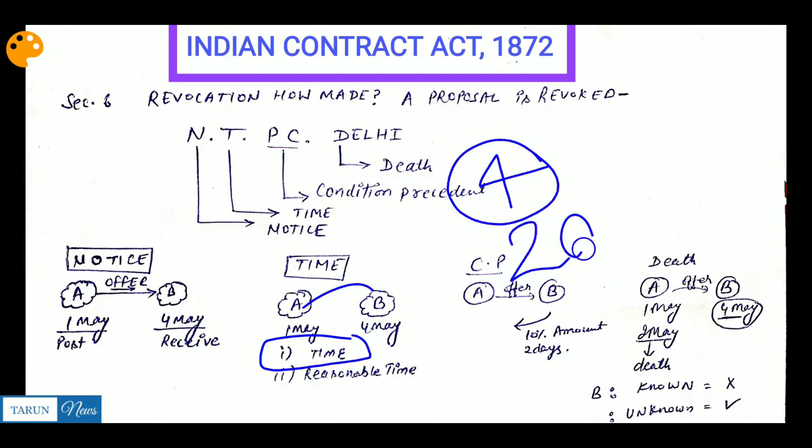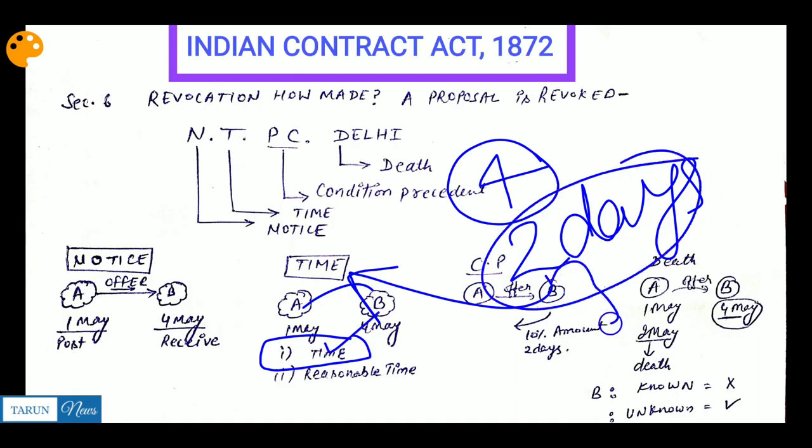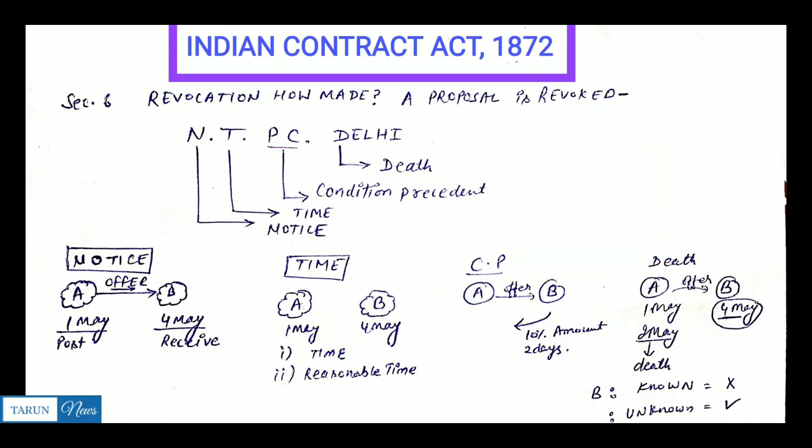Now look, if A prescribed a time - when you receive my offer letter on the 4th, you have to send your acceptance letter within a particular time period. Within two days, three days, four days, one week - a definite time you have to mention. If you have mentioned this, then you need to send your acceptance within that time, otherwise my proposal will be automatically revoked.